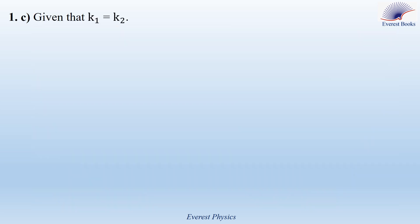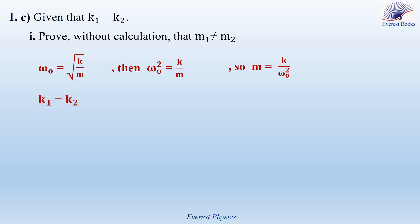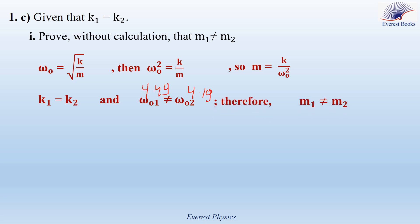Part 1c, given that K1 equals K2. Part i: Prove without calculation that M1 does not equal M2. Using the formula omega_0 equals sqrt(k/m), we get m equals k/omega_0². Since K1 equals K2 but omega_01 (4.49 rad/s) does not equal omega_02 (4.19 rad/s), we can conclude that M1 does not equal M2.